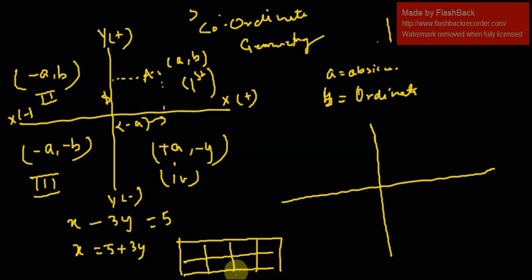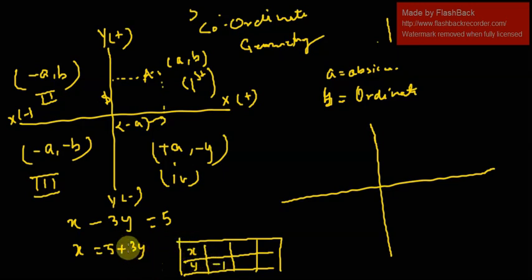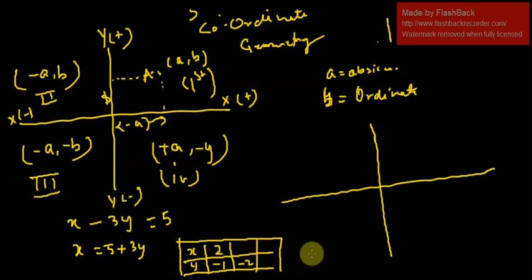We find the coordinates of x and y by substituting values. If y equals minus 1, then x equals 5 plus 3(minus 1) equals 5 minus 3 equals 2. If y equals minus 2, then x equals 5 plus 3(minus 2) equals 5 minus 6 equals minus 1. If y equals 0, then x equals 5. So our three coordinate pairs are (2, -1), (-1, -2), and (5, 0).